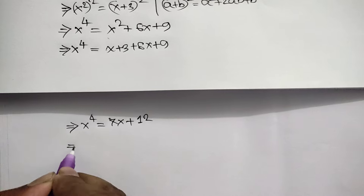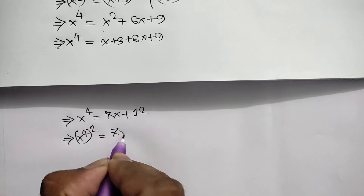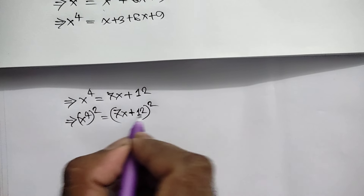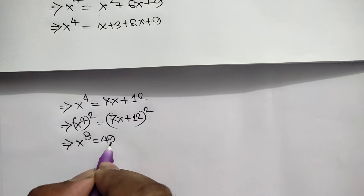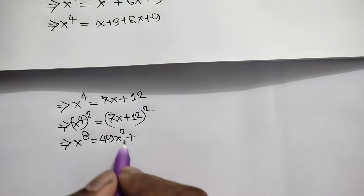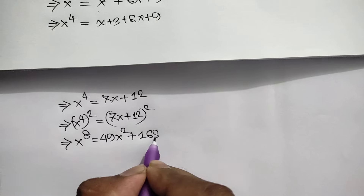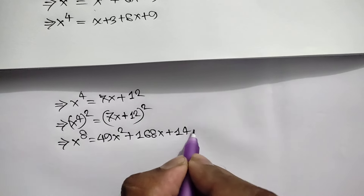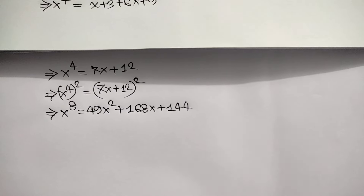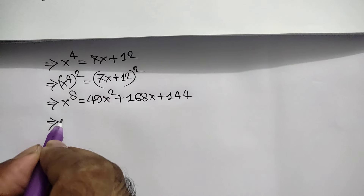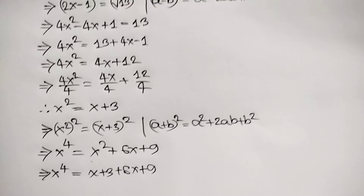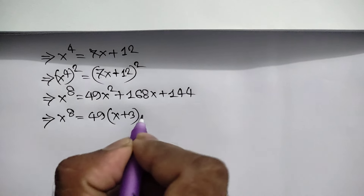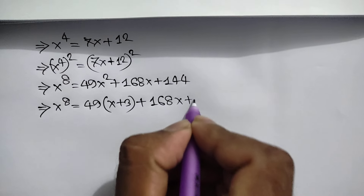Squaring both sides again, we write (x⁴)² equals (7x plus 12)². Applying the same identity, x⁸ equals 49x² plus 2 times 7x times 12 plus 144, which is 49x² plus 168x plus 144. Substituting x² equals x plus 3, we get x⁸ equals 49 times (x plus 3) plus 168x plus 144.